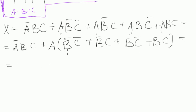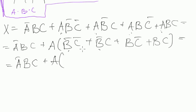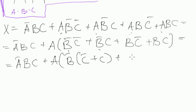Now we can take b negated out of brackets, so let's do that. We rewrite a negated, b negated, c, plus a — in brackets we take b negated out, and inside we have c negated plus c. And then we take b out of the remaining bracket, and inside we get again c negated plus c.